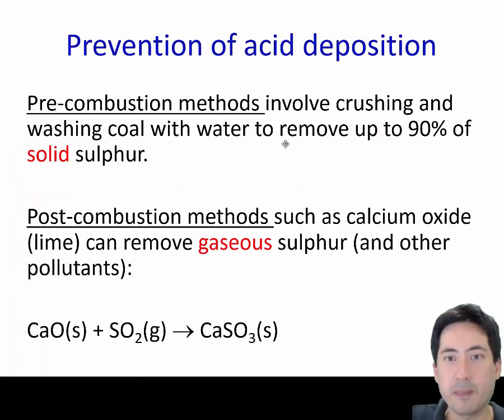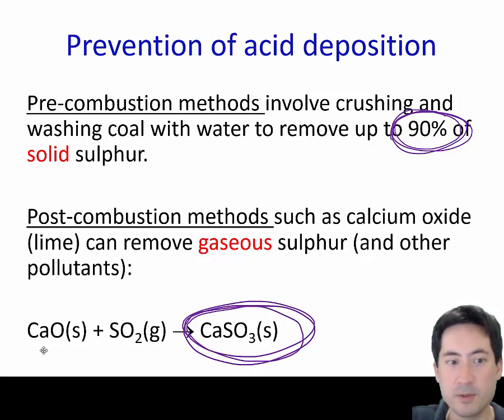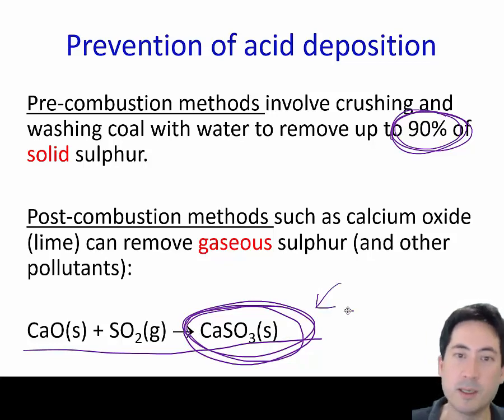How do you stop this happening? If you crush the coal and wash it with water, you can remove 90% of the solid sulfur. If you burn it and give it access to calcium oxide, that will form a solid precipitate you can use to make plaster of Paris. You'll need to learn all these equations, and hopefully the hints I've given will help you remember and understand them.